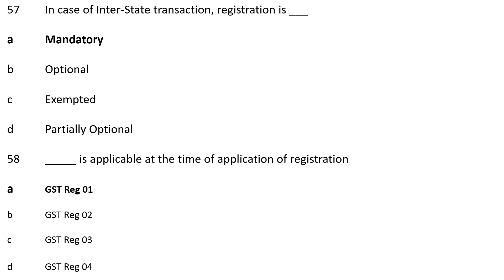Question 58: Dash is applicable at the time of application of registration. Option A: GST REG 01; Option B: GST REG 02; Option C: GST REG 03; Option D: GST REG 04. The correct answer is Option A, GST REG 01 is applicable at the time of application of registration.